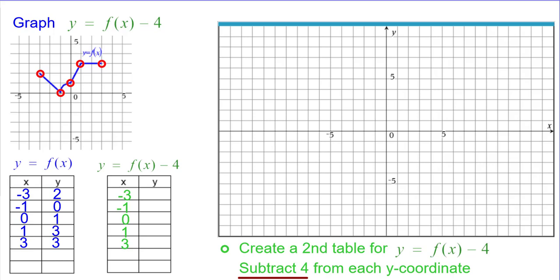So in the first row there, 2 minus 4 is negative 2, so plot negative 3 comma negative 2. 0 minus 4 is negative 4, negative 1 comma negative 4. 1 minus 4 is negative 3, 0 comma negative 3. 3 minus 4 is negative 1, 1 comma negative 1.